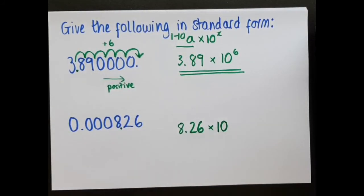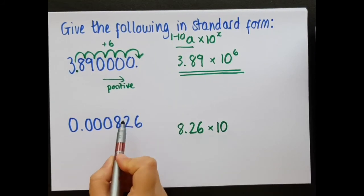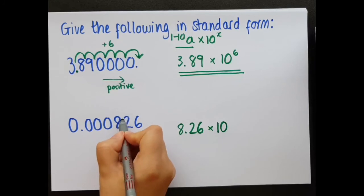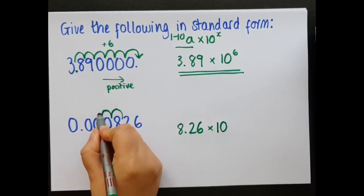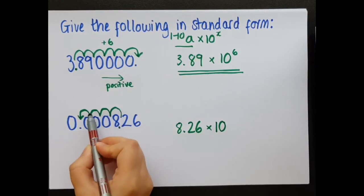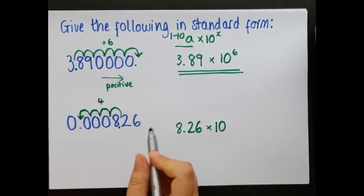And, again, I just count from where I put the decimal point to where it began. This time I'm going backwards, and I'm going back 4 places, 1, 2, 3, 4. But this time, it's backwards, it's in the negative direction.